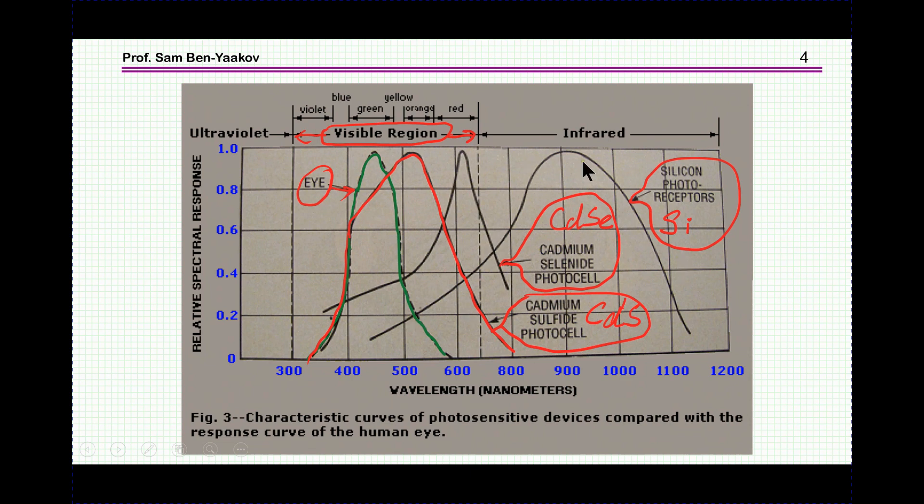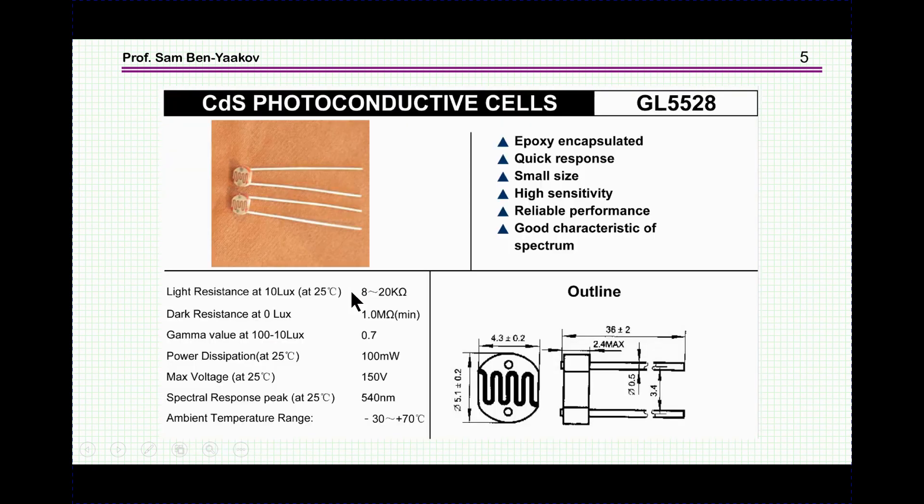And as a comparison, the silicon is actually even at much higher wavelength, this is deeper into the infrared region. So the cadmium sulfide is really very good for visible light, and therefore it's used in many applications.